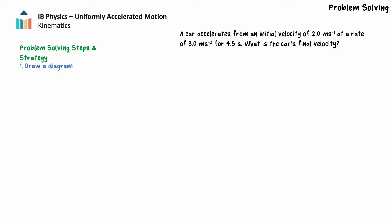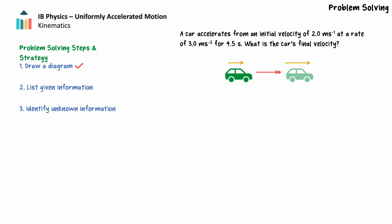Our first step in our problem-solving strategy will be to draw a diagram or picture. Here we've shown the initial and final location of the car, with the length of the velocity vectors roughly indicating the initial and final relative velocities. We've also included an acceleration arrow to indicate that acceleration occurs in the same direction as motion. Our next steps are to list the given information and identify any unknown information. We know the initial velocity, the acceleration, and the time, and are looking for the final velocity. We do not have, nor do we need, any information about the displacement.